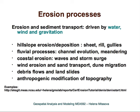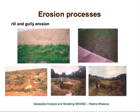What erosion processes are we interested in? Erosion processes are generally driven by water, wind, and gravitation. We can have hillslope erosion and deposition — sheet and rill erosion, which is very common even on small bare hillslopes — and gullies formed in larger areas. There are also fluvial processes such as channel evolution and meandering, coastal erosion due to waves and storm surge, wind erosion and sediment transport, and gravity-driven debris flows and landslides. People also cause significant modification of topography.